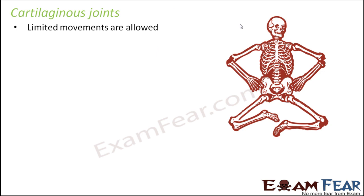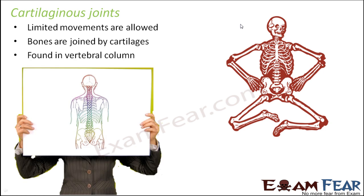The next type of joint is the cartilaginous joint. In these joints, limited movements are allowed — you can move, but only to a limited extent. Here, bones are joined by cartilages, which is why they are called cartilaginous joints. The best example is the vertebral column, which runs along our back. Because of these joints in the vertebral column, we are able to bend our back, but only to a limited extent — we cannot rotate it completely. There is a cavity, but it is very small, not enough for free movement.